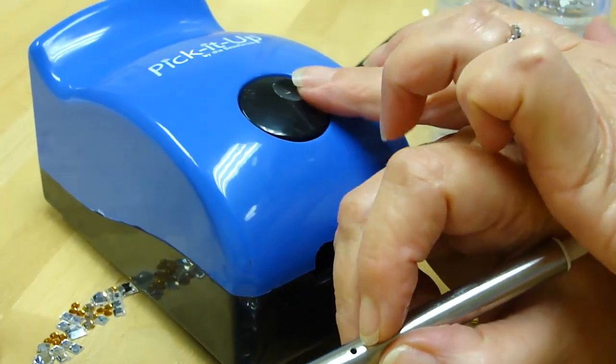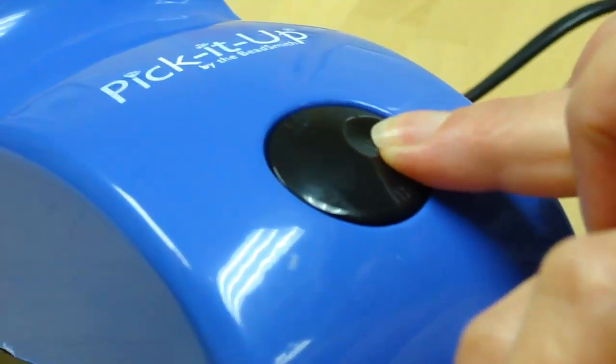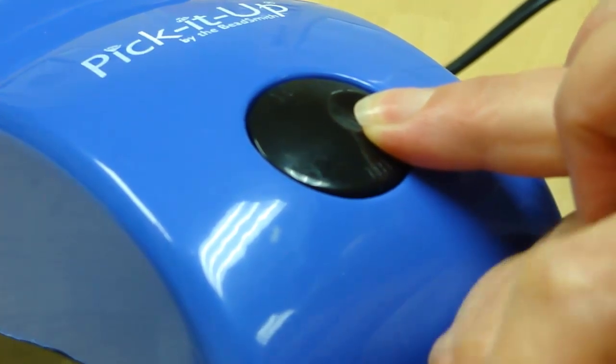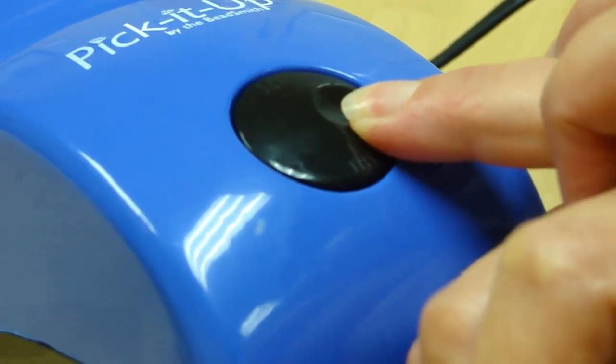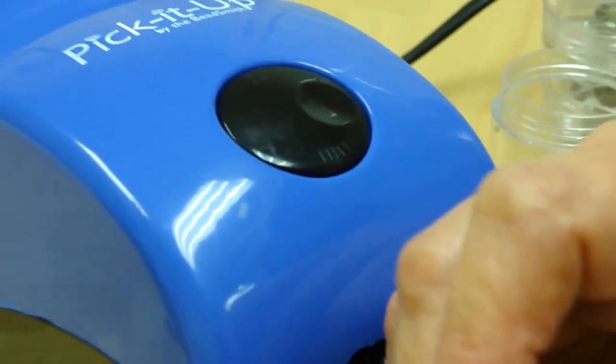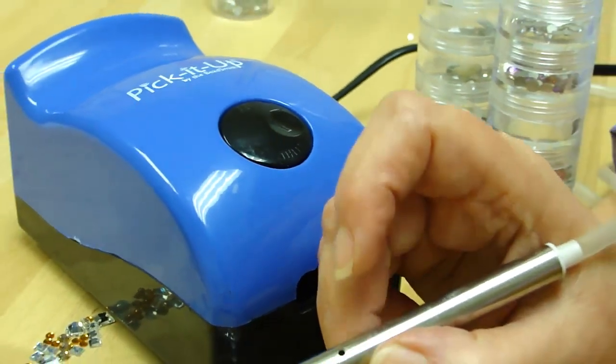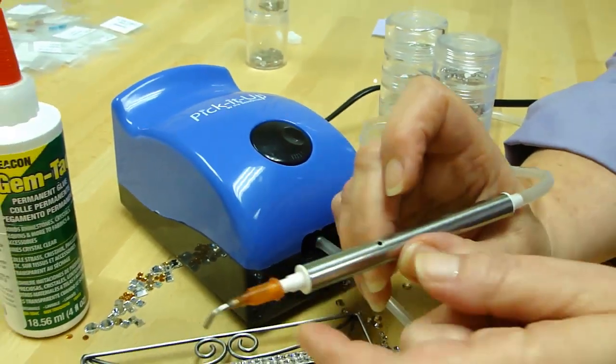A variable dial to create more suction should you be using larger than size 5 rhinestones. There's an inline toggle switch for the power so you can turn it off if you need to get the telephone.